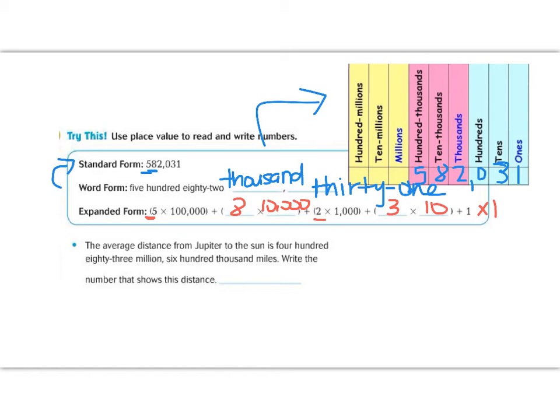At the bottom it says the average distance from Jupiter to the Sun is 483,600,000 miles. Write the number that shows that distance. And when they say the number, they mean standard form. So we want to go back to our words and read them and watch for our commas. So I'm going to go back up here and underline our number is 483,600,000. So start at the top, 483 million. Now our next one says 600,000, so 600,000. And they didn't tell us any numbers in the hundreds, the tens, or the ones. So we fill them in with zeros. So this is our number, 483,600,000.